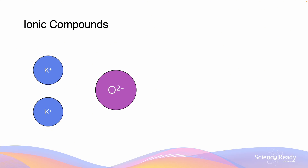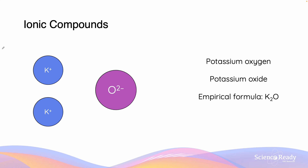For this example we have potassium and oxygen. Because potassium is the cation and oxygen is the anion, we name first potassium, then oxygen. We modify the ending of oxygen to oxide. The empirical formula is K2O, because we require two 1+ charges in order to neutralize the 2− charge of the oxide ion.